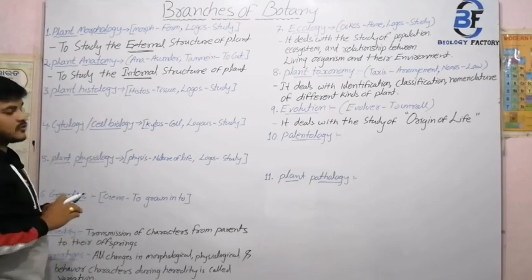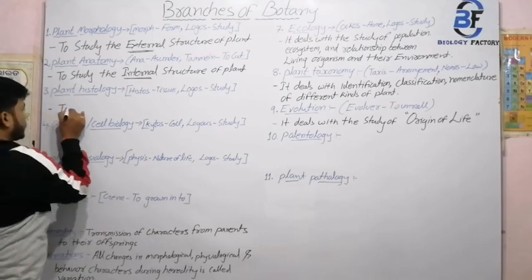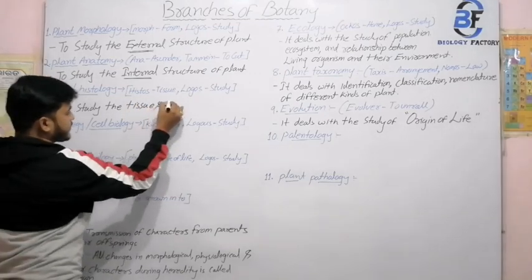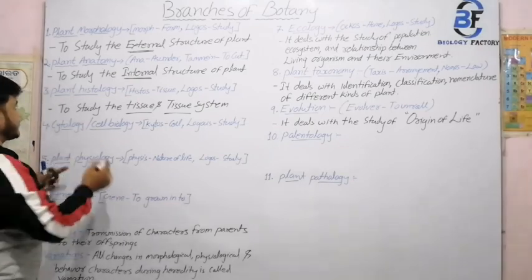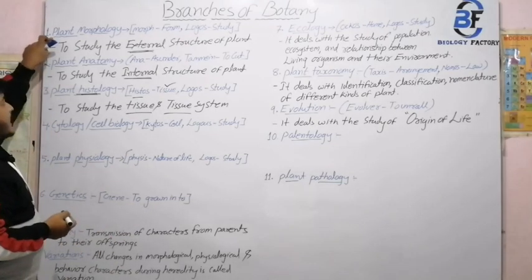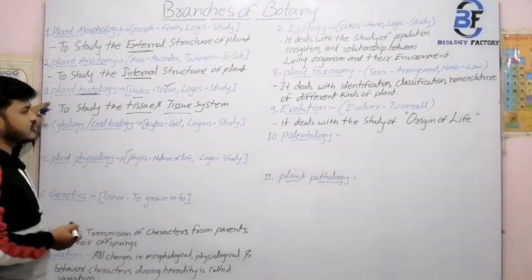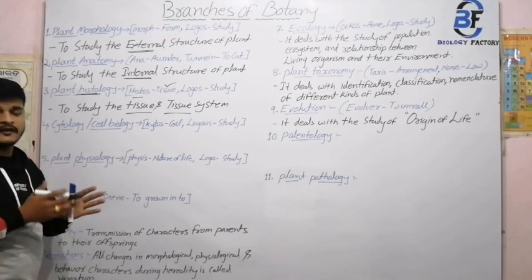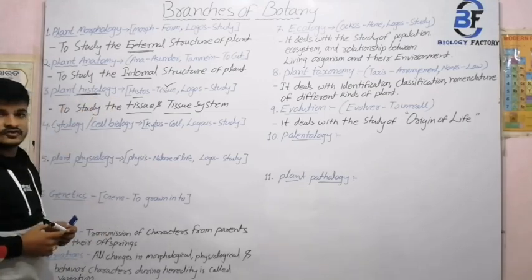Next is plant histology. Histology means we study tissue and tissue systems, which form our organs and body parts. Histo means tissue. So to repeat: plant morphology means study of external structure, plant anatomy means study of internal structure, and plant histology means the study of tissue and tissue systems, which is the basic unit forming organs and body.